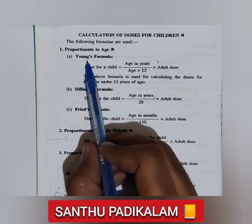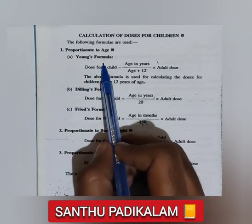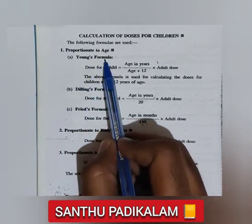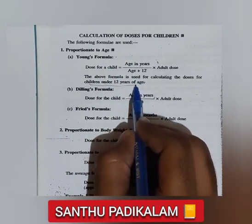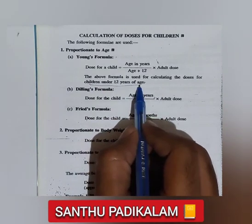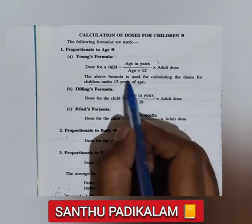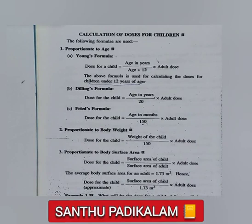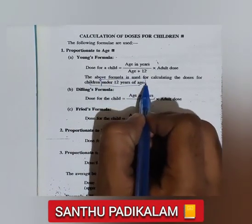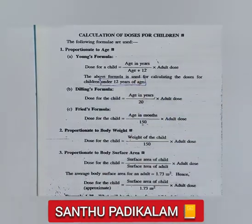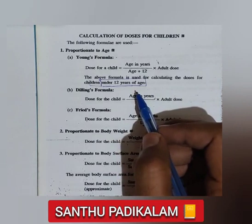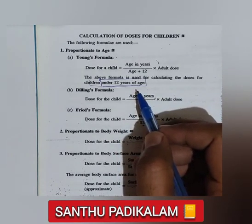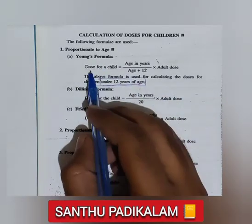First, we will discuss Young's formula. Young's formula applies to children who are under 12 years of age — up to about 15 years, some say. This is very important: if we need to calculate the medicine dose for children in this age group, we use this formula.